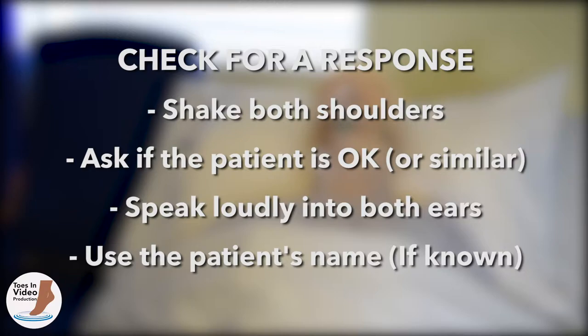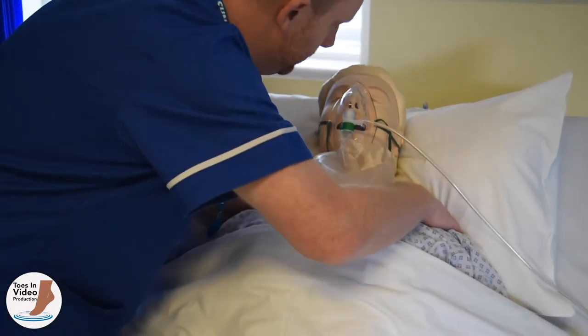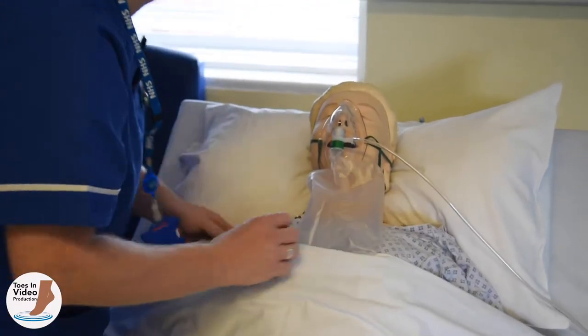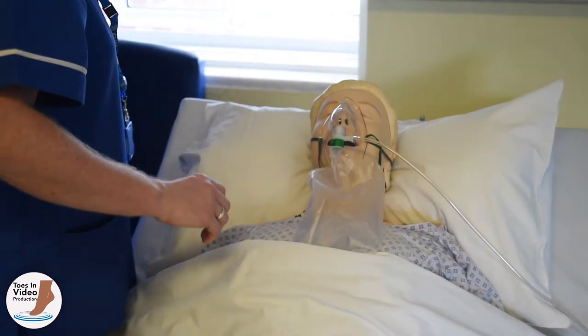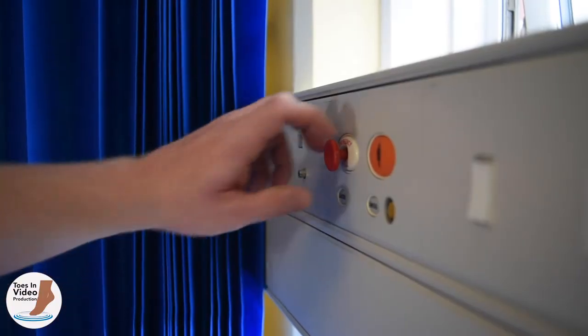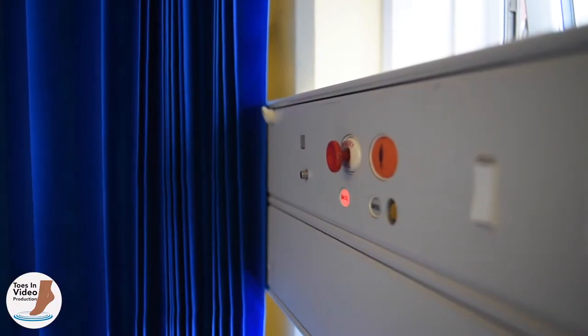Check the patient's level of consciousness by firmly shaking their shoulders and asking if they are okay in both ears, to exclude hearing loss or any other condition which may lead them to initially appear unresponsive — for example: 'Joe? Joe, can you hear me? Can you open your eyes?' At this point, if you are on your own, you need to attract attention and get additional assistance if possible. This can be done by activating alarm bell or buzzer systems or by making a loud, clear appeal to attract attention such as 'Patient — can I have some help please?'